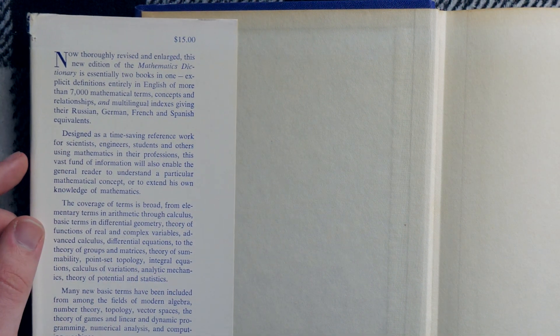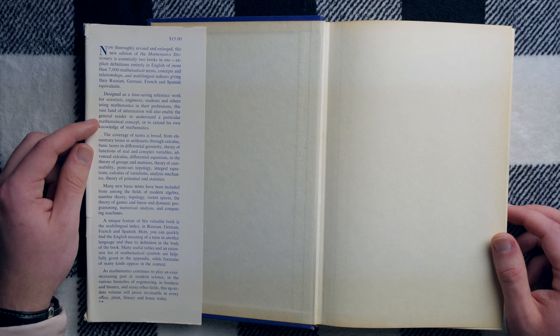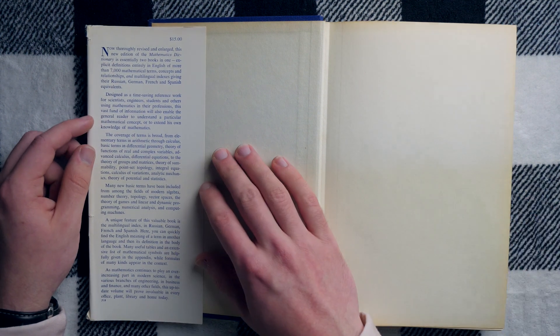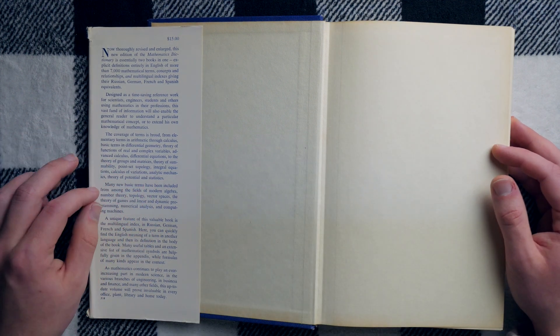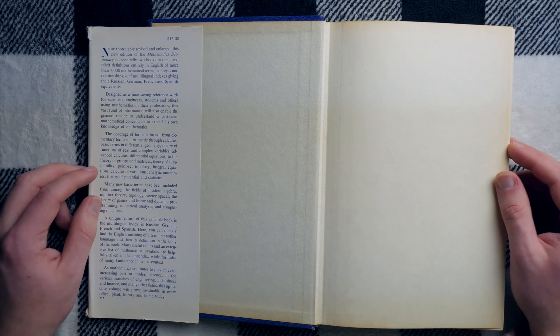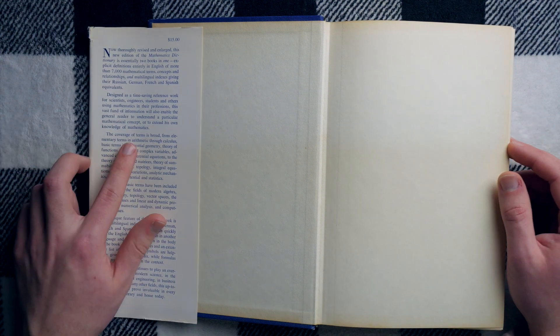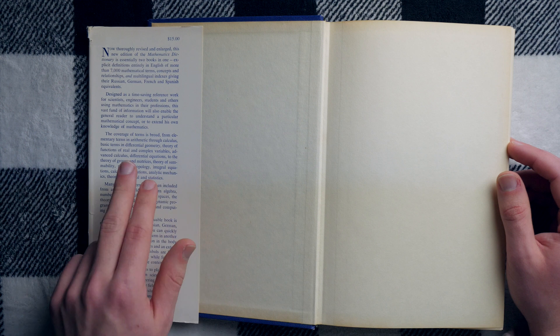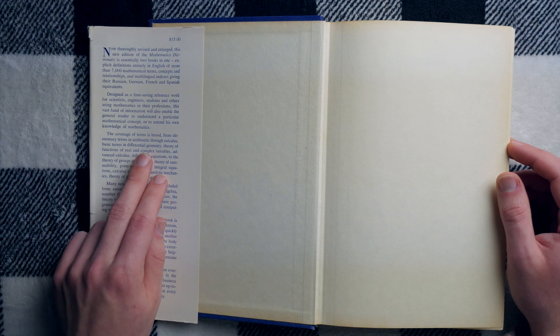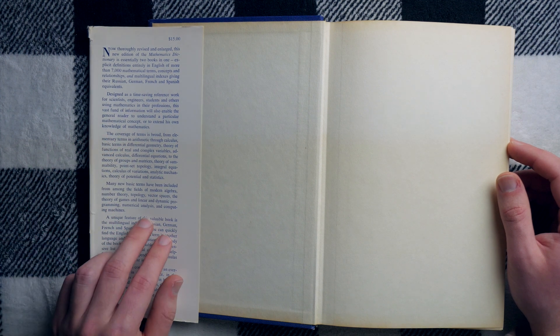So what's the point of this mathematics dictionary? Well, it says it's designed as a time-saving reference work for scientists, engineers, etc. It will also enable the general reader to understand a particular mathematical concept or to extend his own knowledge. Much like an encyclopedia, I think it kind of feels like. Although that's not what it's trying to be, but it kind of feels like that sometimes.